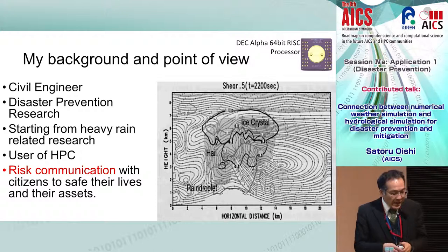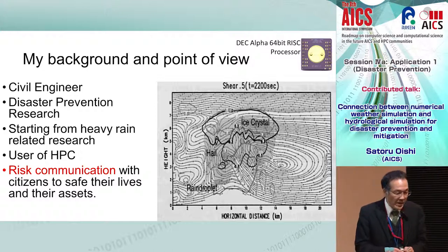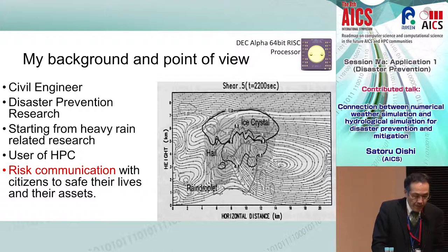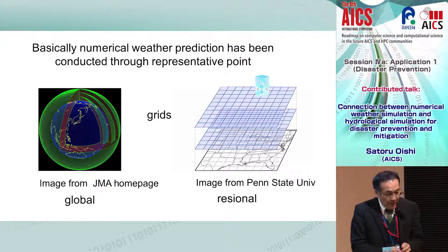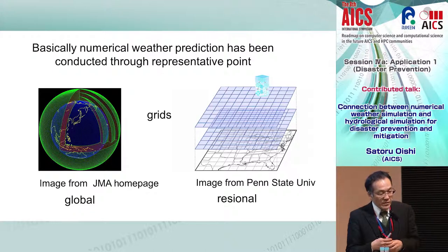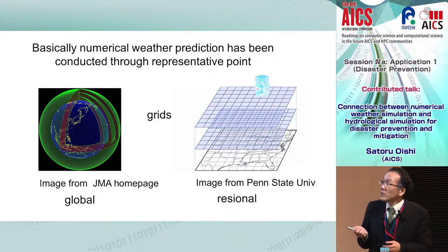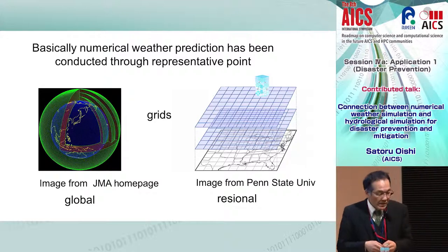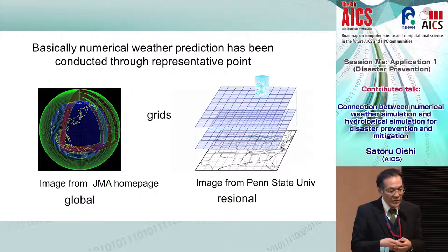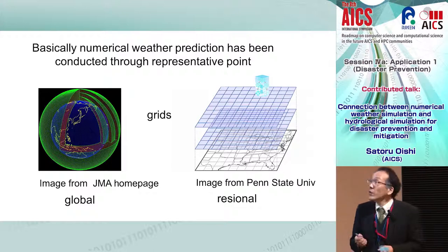After coming back to Japan, I also conducted risk communication research with citizens to save their lives and assets. I would like to talk about two issues: one is the connection between the hydrological and meteorological parts, and the other is risk communication. The core problem relates to the grid system used in both fields.